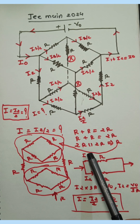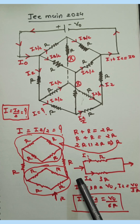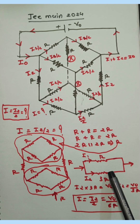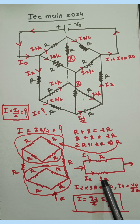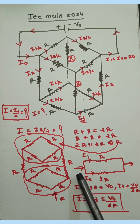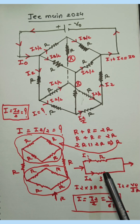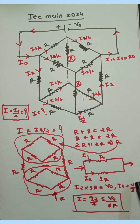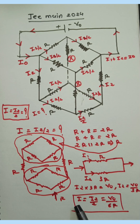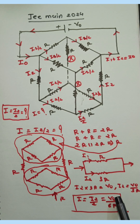Suppose I1 passes through the upper branch and I2 passes through the lower branch. The potential difference across 3R is I2 times 3R, which equals the battery voltage V0. So I2 equals V0/3R. Since we want I which equals I2/2, the answer is V0/(3R × 2), which is V0/6R.